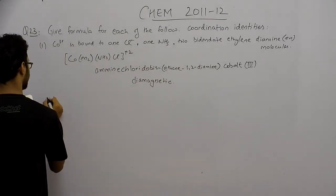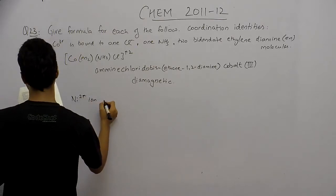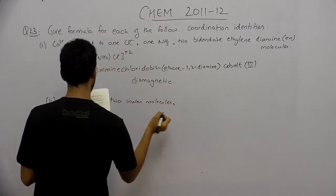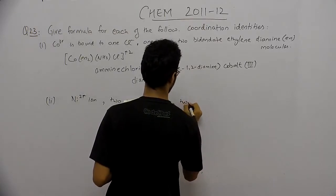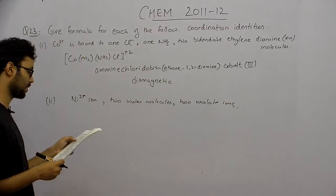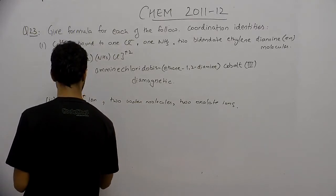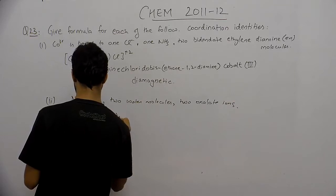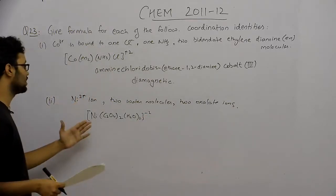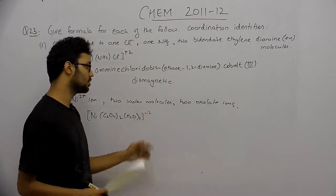The second part involves a nickel 2+ ion bounded to two water molecules and two oxalate ions. The coordination compound formed: nickel is in plus 2 oxidation state, and we have two oxalate ions — oxalate is minus 2 — so the total charge on this compound should be minus 2.